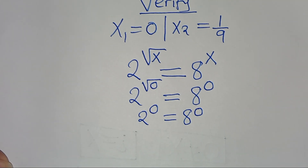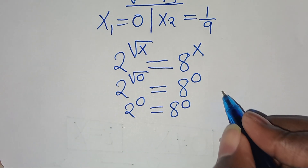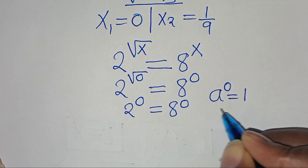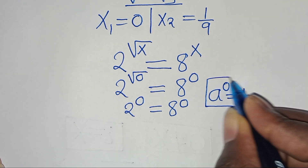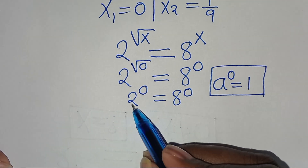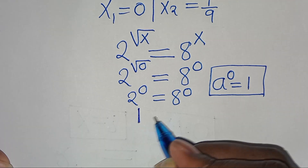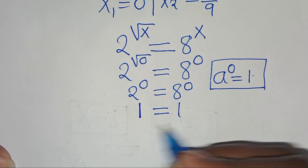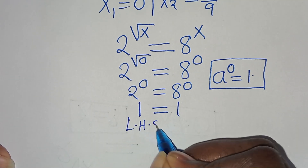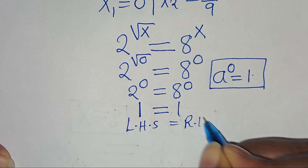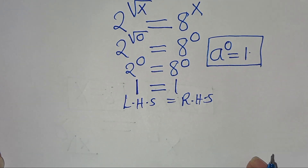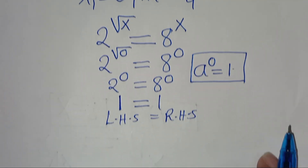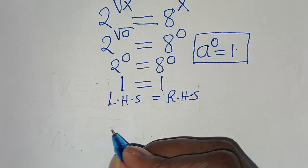We use the property that a to the power of 0 equals 1. Applying this property, 2 to the power of 0 equals 1, and 8 to the power of 0 equals 1. So the left hand side equals the right hand side, confirming x₁ equals 0 is a valid solution.